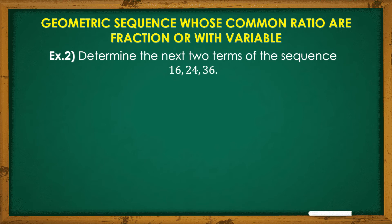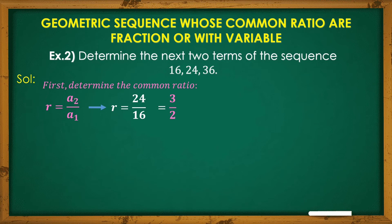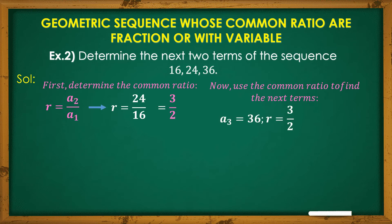Next, example number 2. Determine the next 2 terms of the sequence 16, 24, 36. For our solution, once again, we will start with getting or solving the common ratio. R equals a sub 2 over a sub 1. Again, any term divided by its preceding term or yung magkasunudan na numbers. A sub 2 is 24. A sub 1 is 16. So, 24 divided by 16 will give you a fraction, which is 3 halves. So, gamitin natin yung fraction as a common ratio to get the next 2 terms of the sequence.